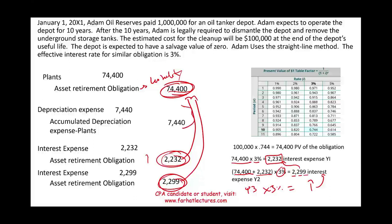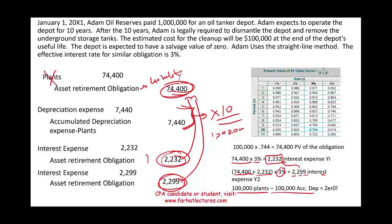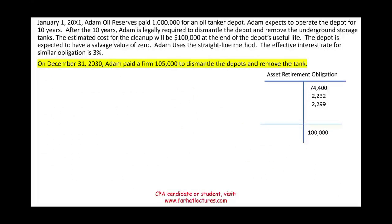I also book the depreciation entry 10 times, so by the end the ARO-related plant asset is fully depreciated and gone as well. After 10 years of adding interest expense to the asset retirement obligation, the liability will have grown to exactly $100,000, and we are ready to remove the asset.